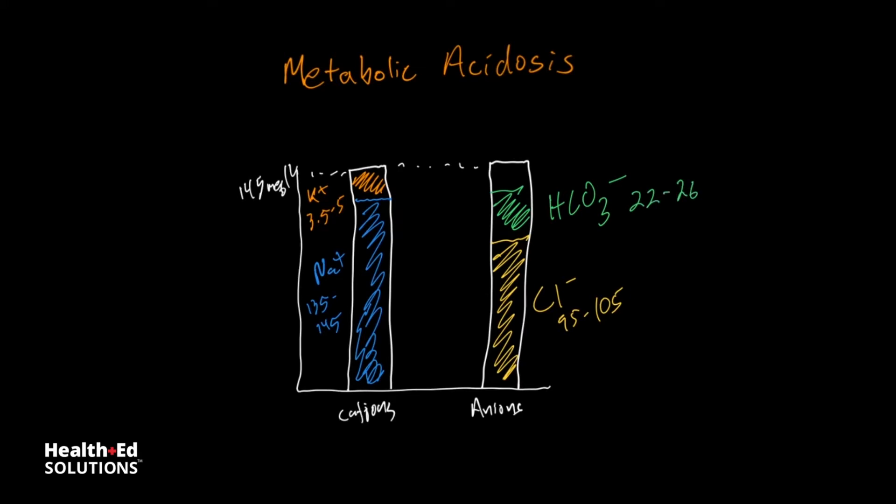Now these are the major cations and anions that we measure on a regular basis. So what we have here, this here is our anion gap. Now an anion gap is just things that we are not measuring, because remember the anions and the cations have to be equal. So the unmeasured things, the most common unmeasured things is phosphate and amino acids or albumin.